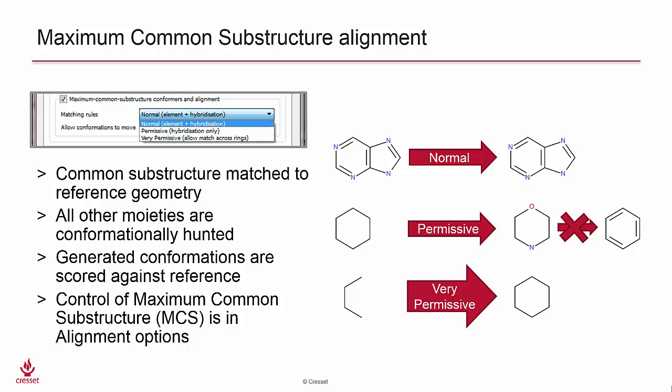When the MCS option is turned on, a special conformation hunt is done. The common substructure with the reference molecule is held in the same conformation as the reference molecule, and groups that are not part of the common substructure are conformationally hunted.